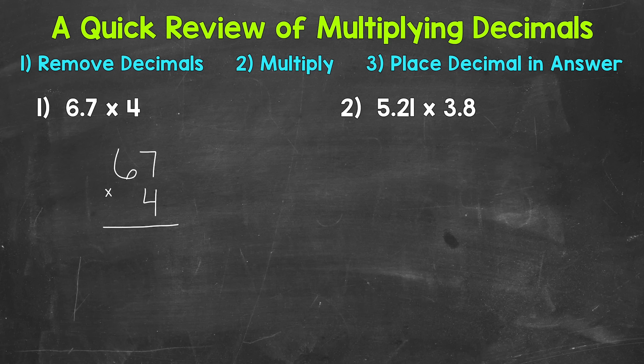So we'll start with 4 times 7, which is 28 — carry that 2. And then we have 4 times 6, which is 24, plus that 2 is 26. So we get 268.